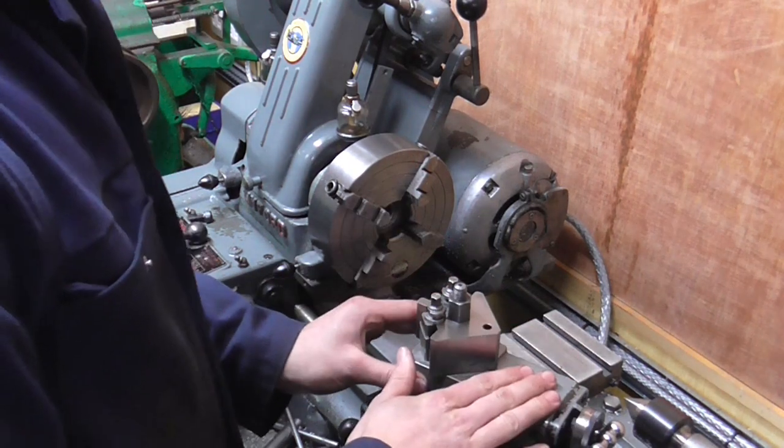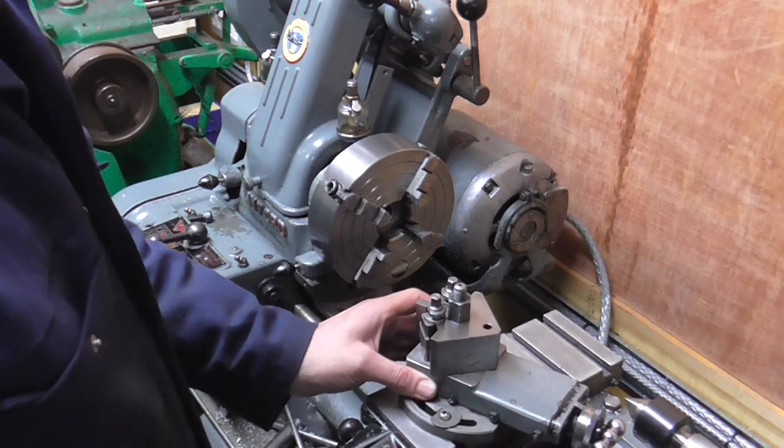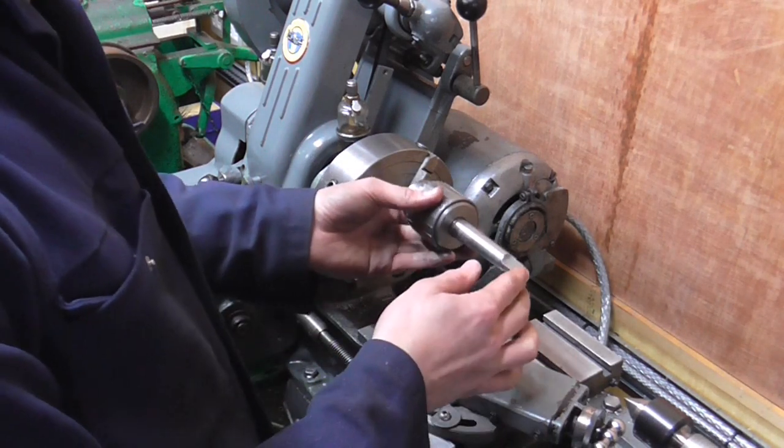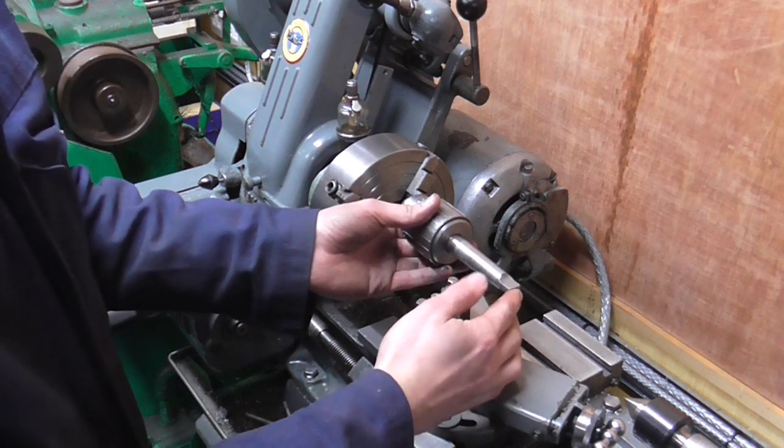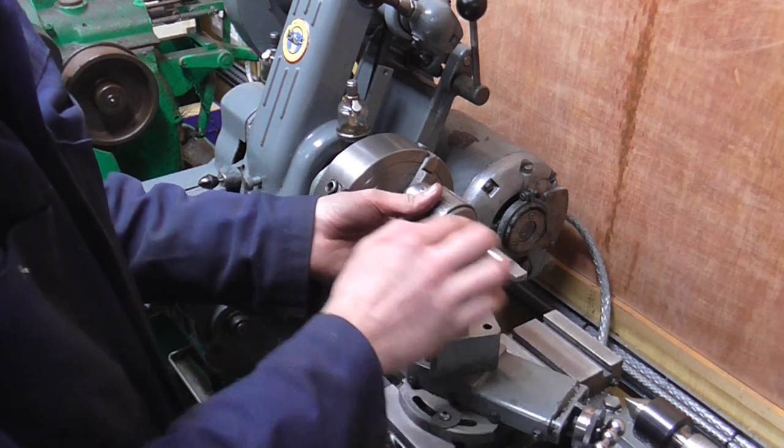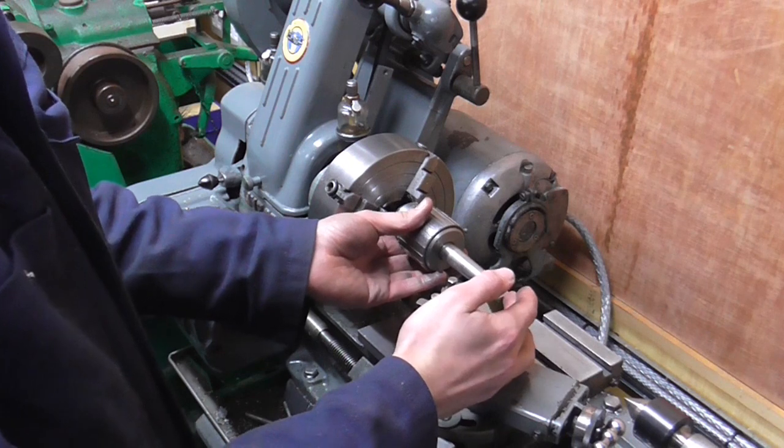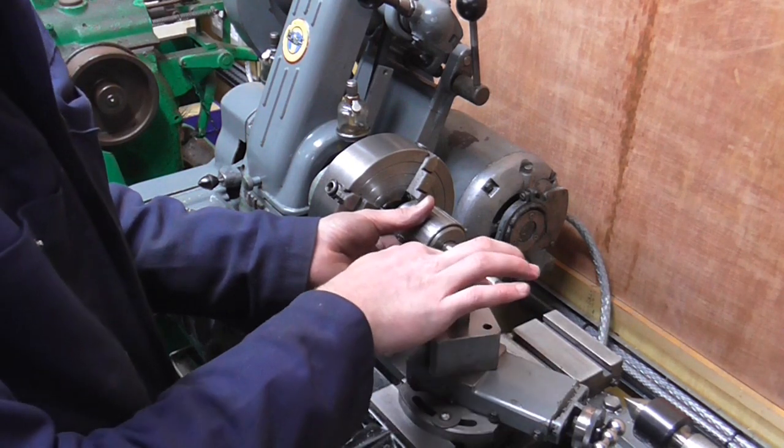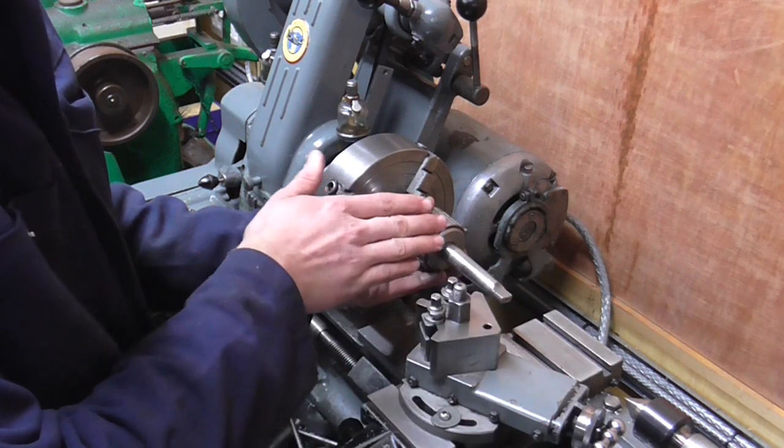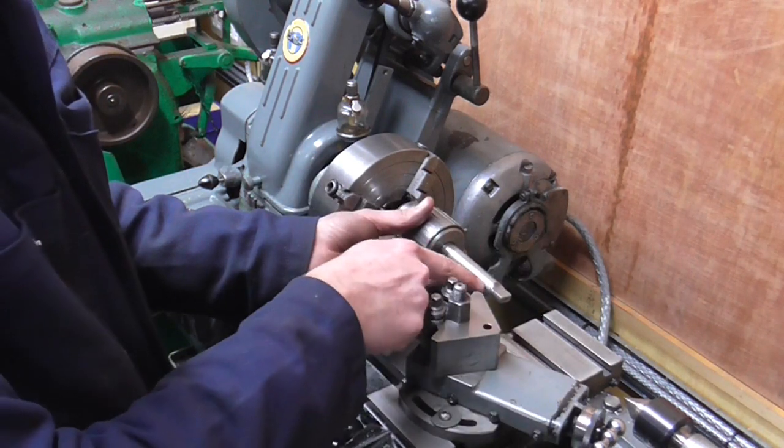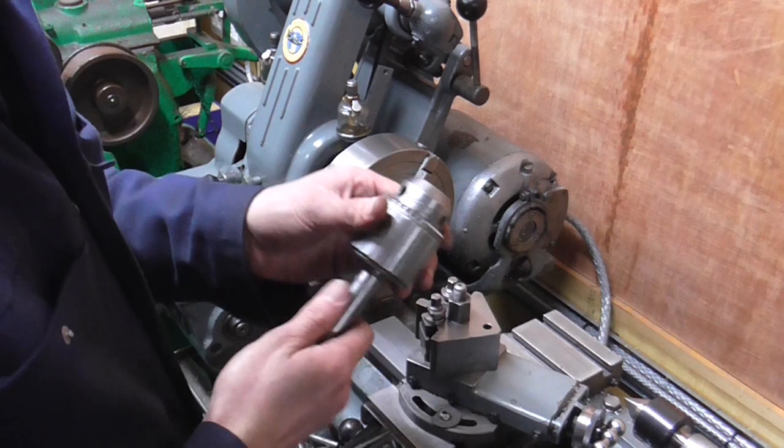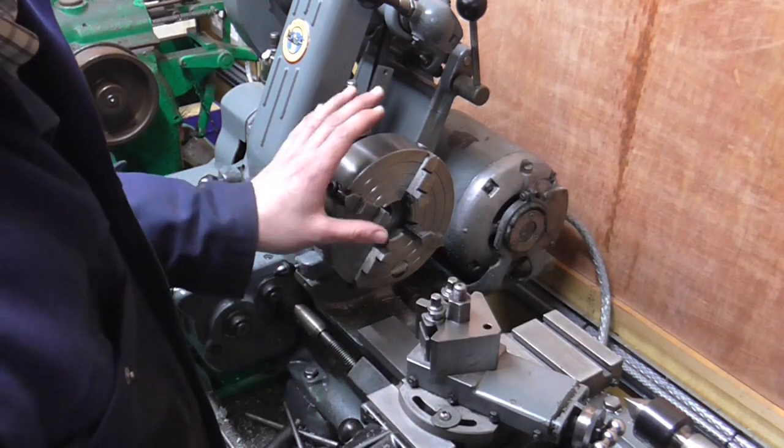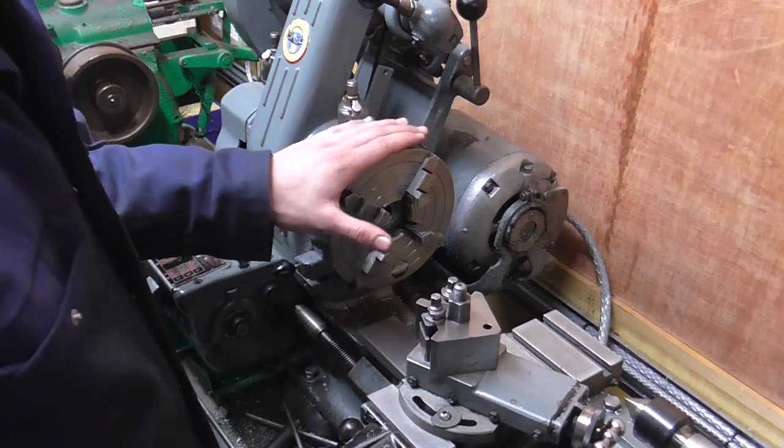Now for accurately setting top slide angles my favorite method is to copy or match something. If I was trying to replicate this taper I would set it up somehow so that it's running true, and then using a clock on the tool post I would tram in the top slide until it was running parallel to that angle. That's an accurate way to do it, but you need to have something to copy. In this case I don't have anything to copy, so I'm going to use a sine bar.